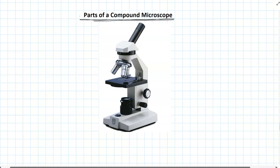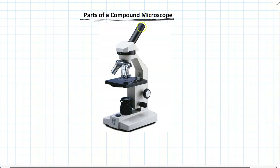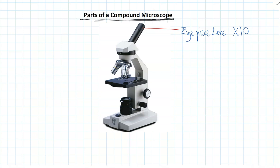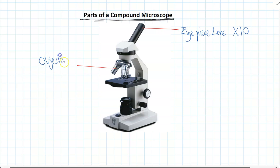Here are the microscopes we use at school. They're called compound microscopes because they have two different lenses in them. The two lenses combine their magnification to increase how closely we can see into the cell. The first lens is the eyepiece lens at the top — that's always times 10 on our school ones, times 10 magnification. The other lenses that combine with the eyepiece are called the objective lenses down at the bottom. They can be either times 4, times 10, or times 40.